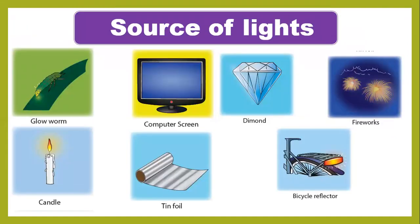You have to find out the light sources. As you can see, the candle and the fireworks are sources of light. The bicycle reflector is not a source of light because it reflects — when light hits it, it will shine. So the glowworm, fireworks, and candle are sources of light.